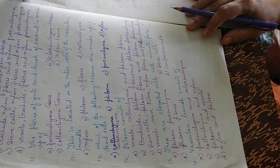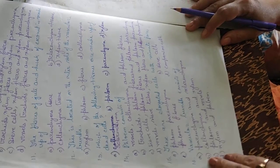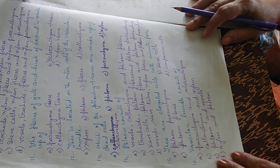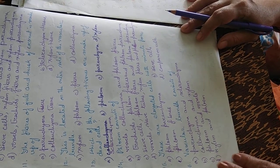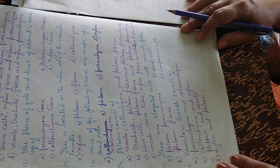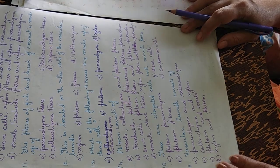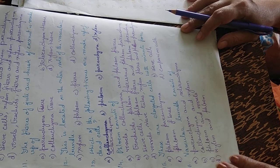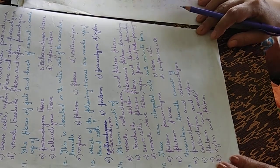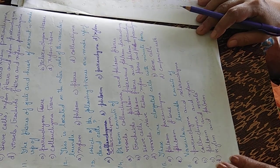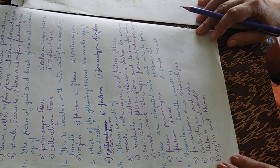Phloem consists of — fourteenth question. Options: vessels, colenchyma and phloem fibers; tracheids, phloem fibers and phloem parenchyma; sieve cells, phloem fibers and phloem parenchyma; or vessels, sieve tubes, xylem fibers and phloem parenchyma. The fourteenth answer is C — phloem consists of sieve cells, phloem fibers and phloem parenchyma.